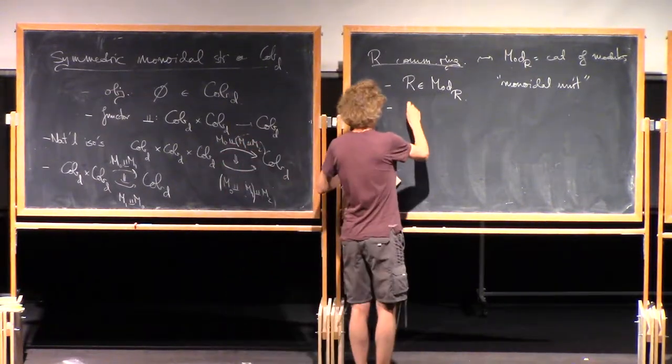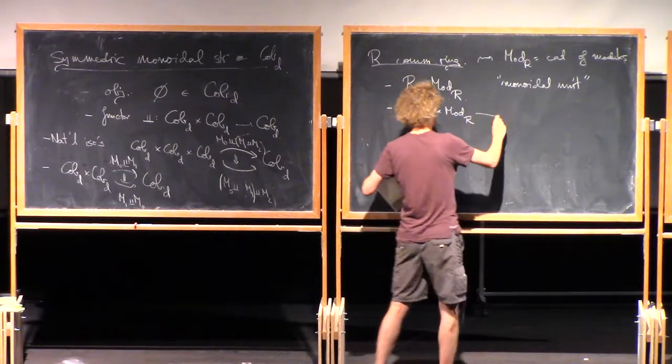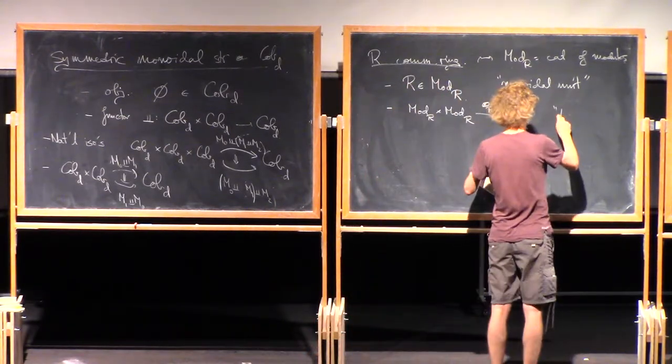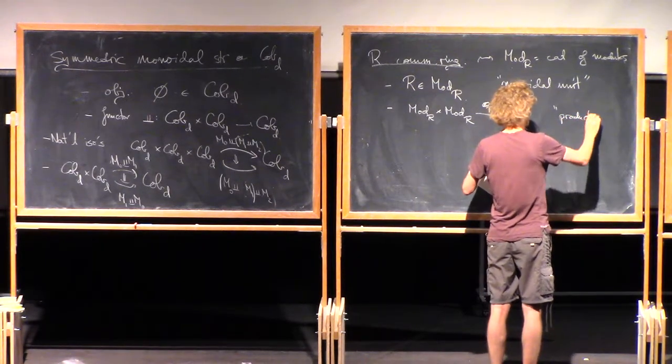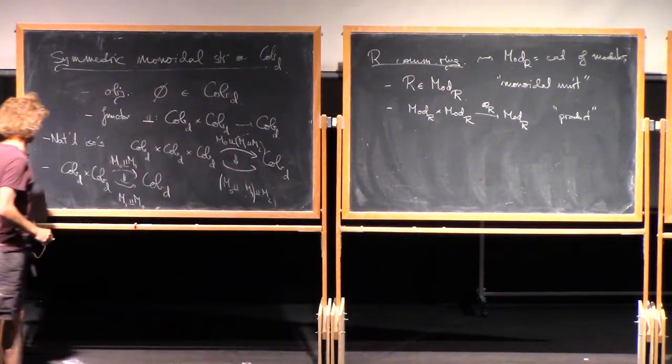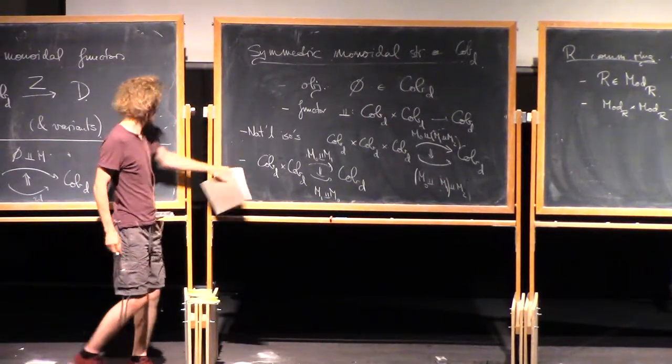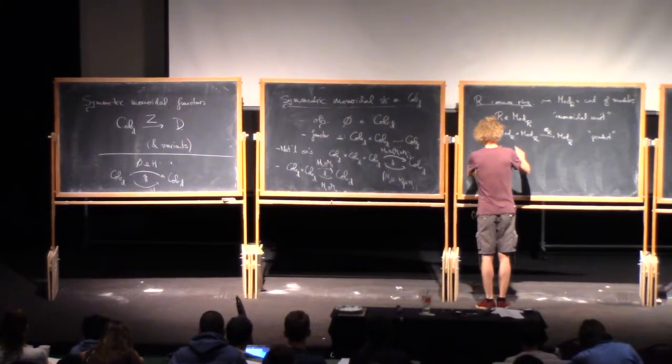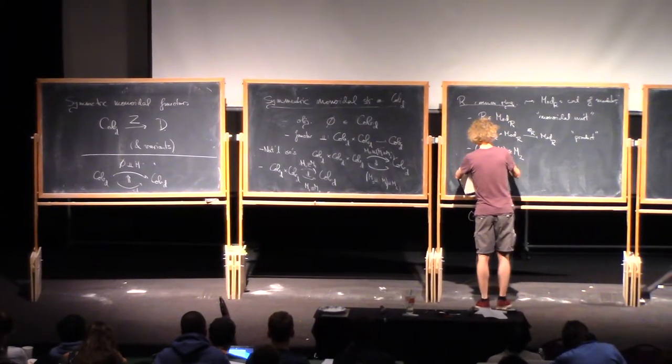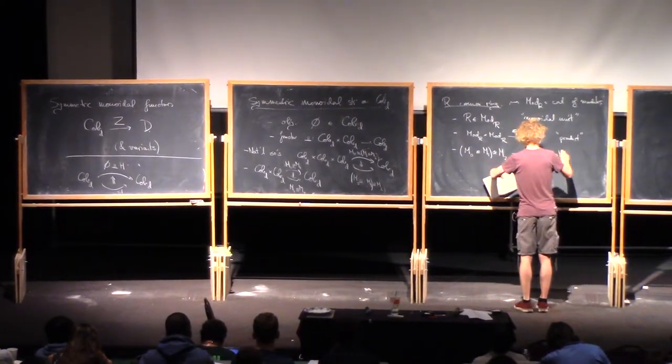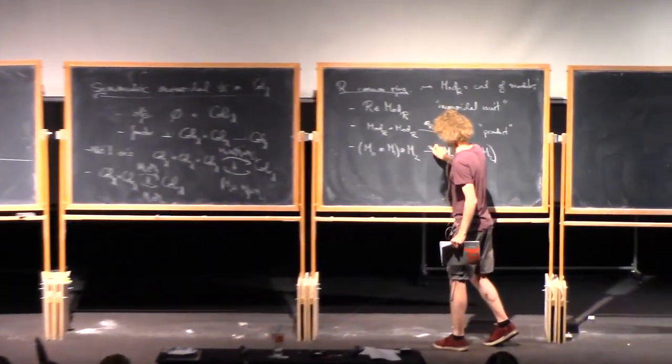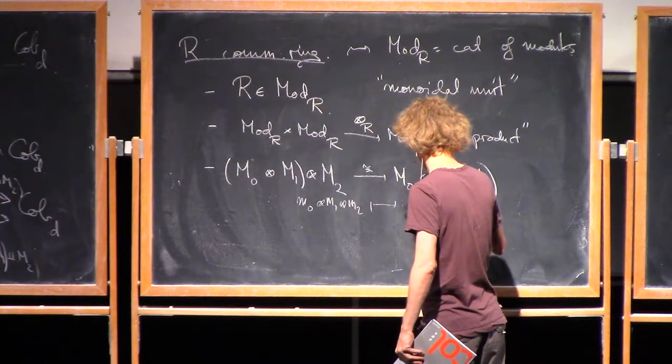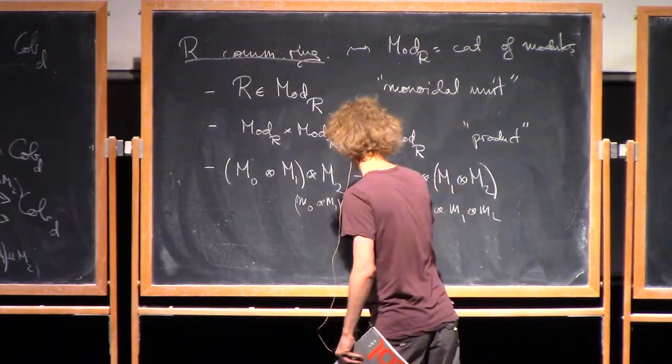The next piece of data is the tensor product. I don't know what that's called. Maybe just the tensor or the product or something. It's often considered the most important part of the structure. Then all these natural isomorphisms are named. This one is called the associator. This one is called the symmetry. And this is sometimes called the unitor. This is the standard way of identifying these two things. M_0 tensor M_1 tensor M_2 goes to M_0 tensor M_1 tensor M_2. And so on.